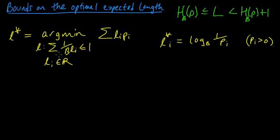If we think about what happens with the Kraft inequality, we know it was satisfied with equality for the l-stars. If we make some lengths smaller, those terms in the sum get bigger and could violate the inequality. So maybe a better plan would be to round all lengths up — then our expected codeword length won't get too bad.